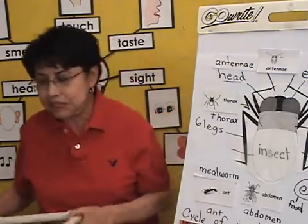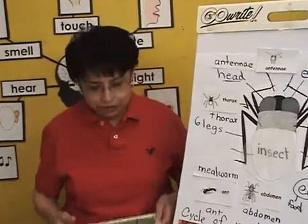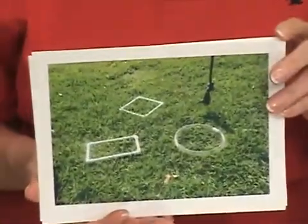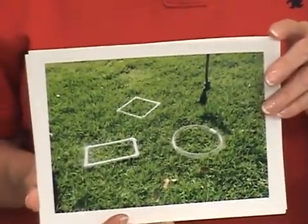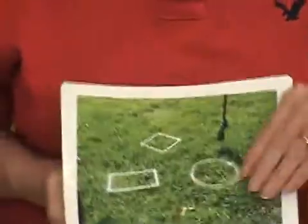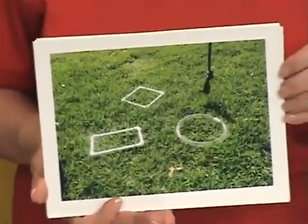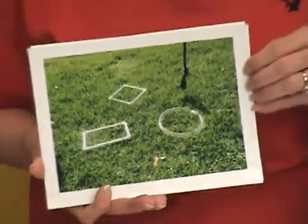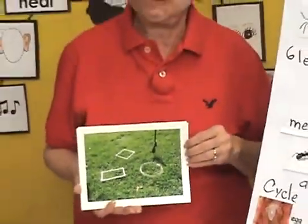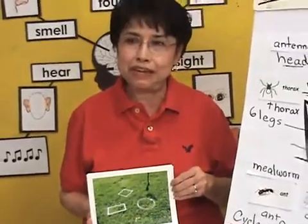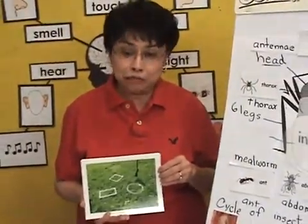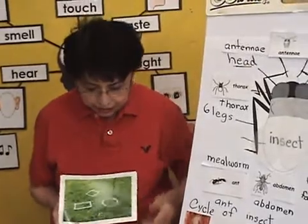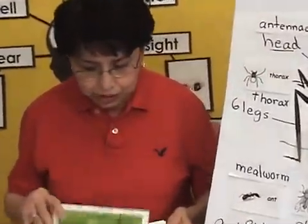I'm going to assign groups — a square group, a rectangle group, and a circle group. For video purposes, I took pictures so you can see how they look when laid outside. I have two or three circles, two or three squares, and two or three rectangles, because I don't want too many children crowded around one shape. I'm reinforcing shapes and observation skills, and every child is going to get a hand magnifier.